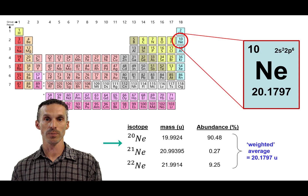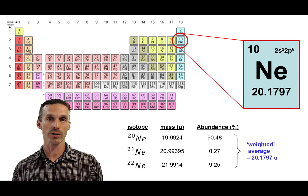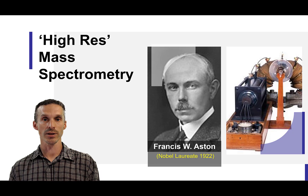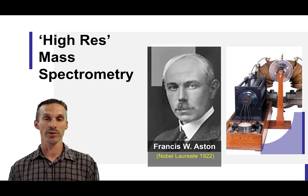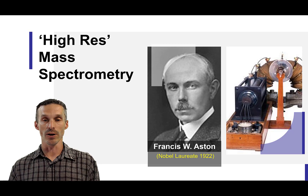Unfortunately, JJ Thomson wasn't even able to observe the neon-21 isotope — it's both at very low abundance and his spectrographs didn't have the resolution to distinguish those closely spaced masses. It was actually JJ Thomson's successor, Francis Aston, who was able to build a better mass spectrometer. Literally — he built it himself. At the time, to make an instrument like this you had to be a master glass blower and able to create vacuum pumps; everything was handmade. With his device, Aston basically went through the periodic table and discovered isotope after isotope, characterizing everything available to him.